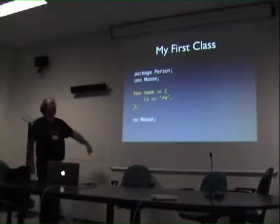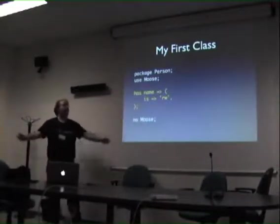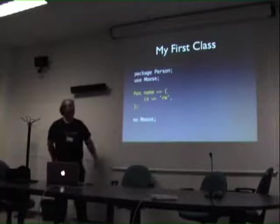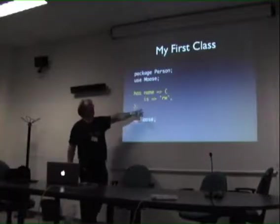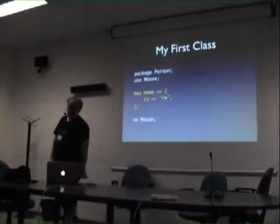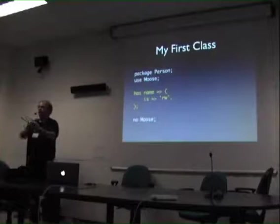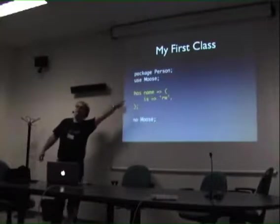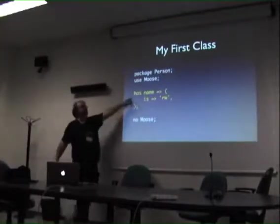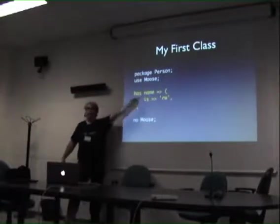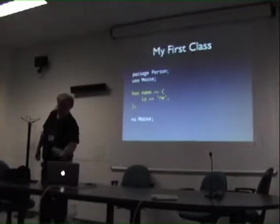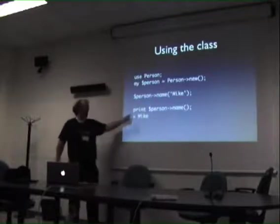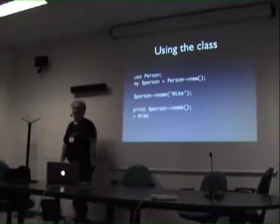Moose - my first class. Package Person, use Moose, and then we say `has`. Let's give this class one attribute, which is a name. So we say `has name`, and we say `is => 'rw'`. At that point we have, for free, a `new` method. So I can now say `Person->new` and I will get an instance of Person. We've also got an accessor for this attribute called `name`. So I can do: `my $person = Person->new`, then say `$person->name('Mike')`, and if I go `print $person->name`, it prints 'Mike'. It's simple.